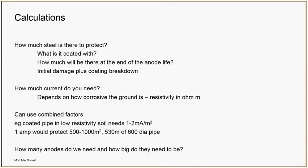We can either work out how much coating is going to be exposed and design the system for that, or we can use a combination factor — for example, a coated pipe in a low-resistivity soil needs 1 to 2 milliamps per square meter, combining coating breakdown into a single number. Using those numbers, to protect 500 to 1000 square meters of pipe surface area you need about one amp, and that would protect about 530 linear meters of a 600 mm diameter pipe. So that gives us how much current we need — the next stage is to work out how many anodes we need and how big they need to be to get us that one amp.